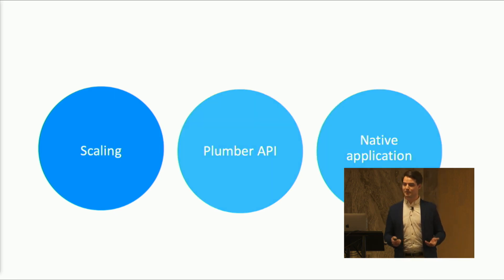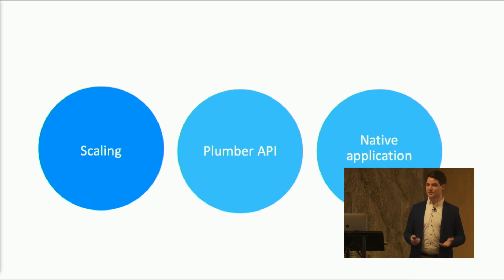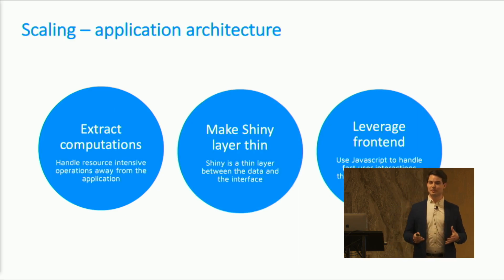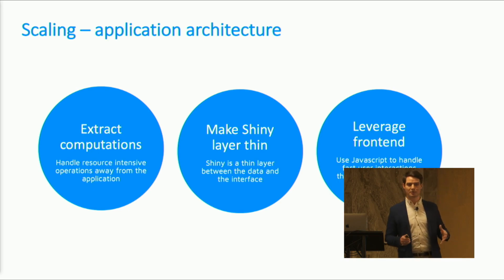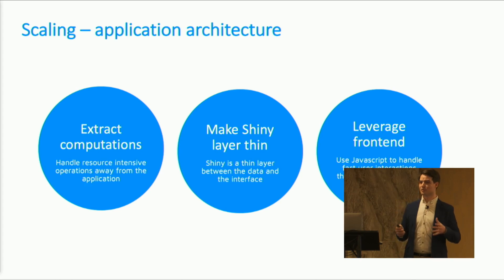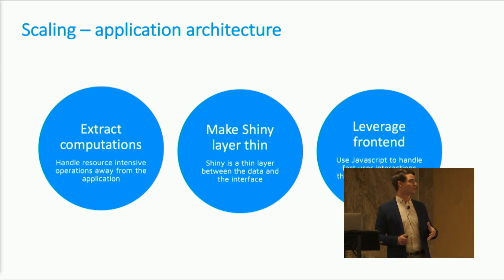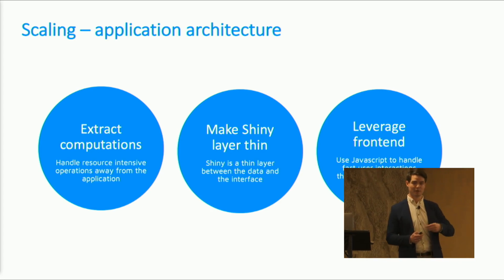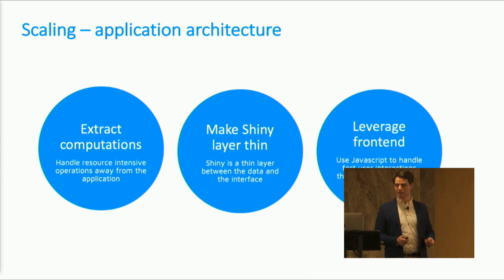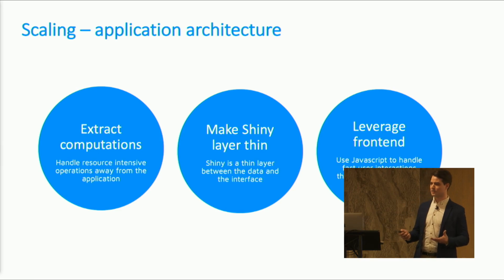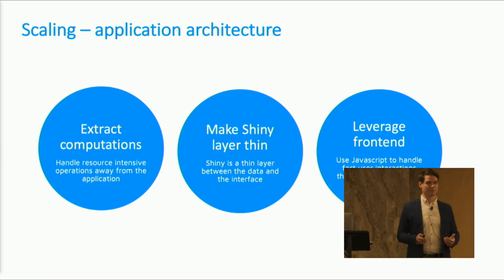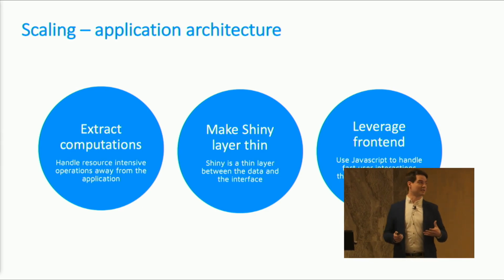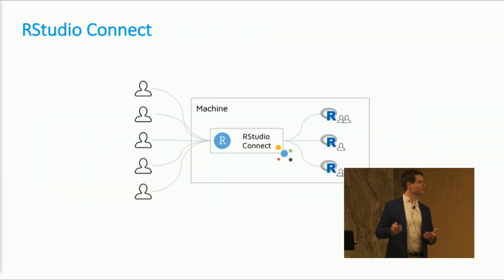To scale your Shiny application successfully in production, follow simple rules for good application architecture. First, extract computations from the server — R is single-threaded, so don't put too much load on it while running. Use a database, run ETLs, extract processes away from the app and just trigger those processes. Second, make the Shiny layer thin — Shiny is a great middleware connecting frontend with backend for communication. Third, leverage frontend JavaScript, which allows you to create great interactions without even needing to communicate with the backend.